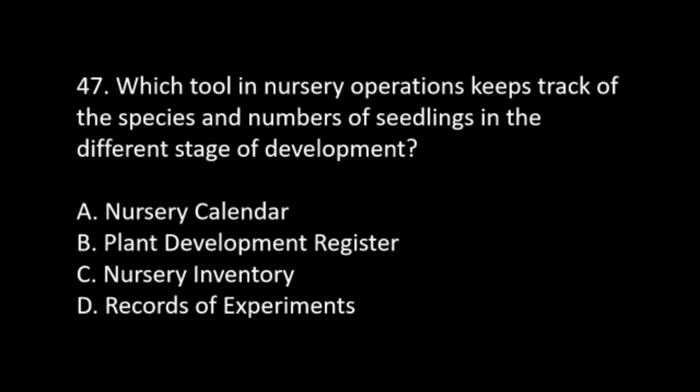Number 47. Which tool in nursery operations keeps track of the species and numbers of seedlings in the different stages of development? A. Nursery calendar. B. Plant development register. C. Nursery inventory. D. Records of experiments. The answer is C. Nursery inventory.